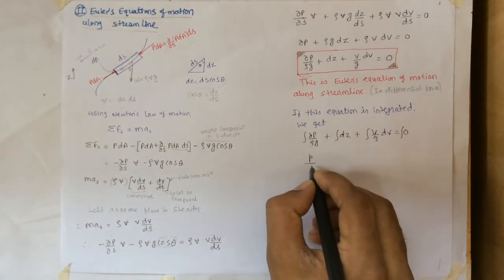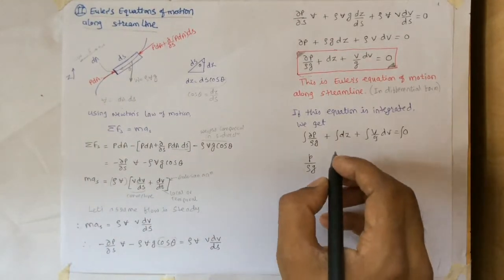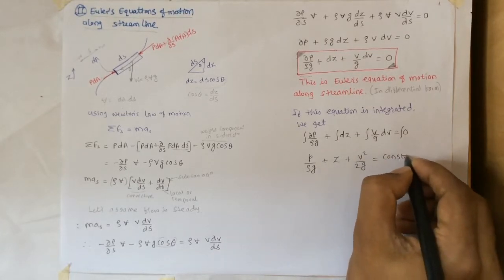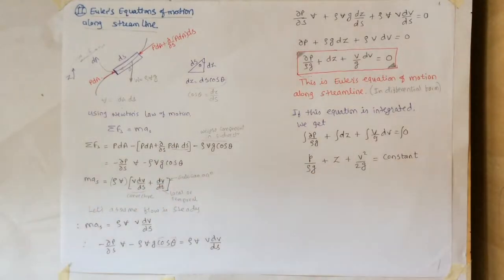So after taking integration we get p/(rho g) plus z plus v²/(2g) equals to constant. As derivative of constant is zero, integration of zero would be some constant.